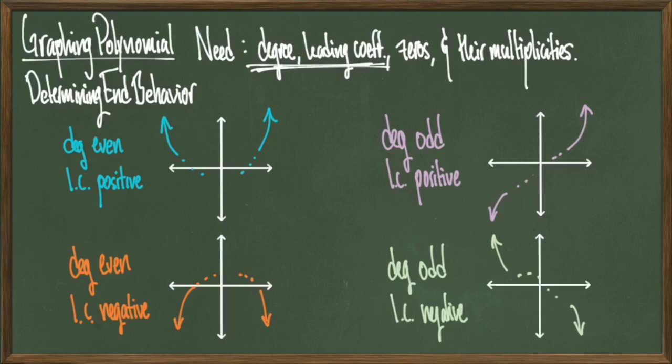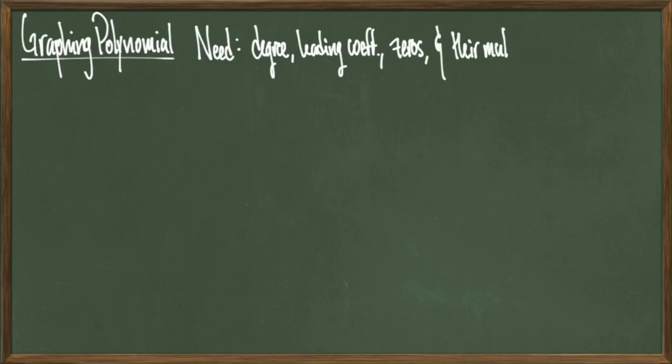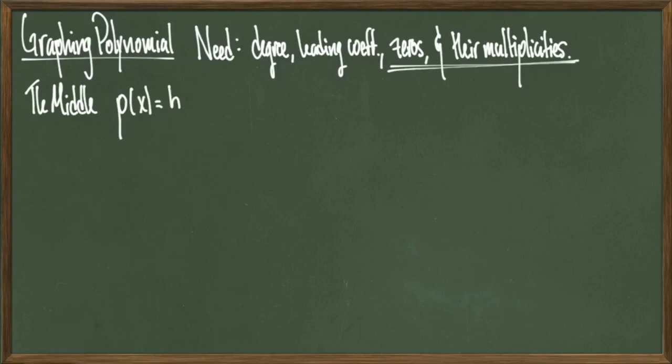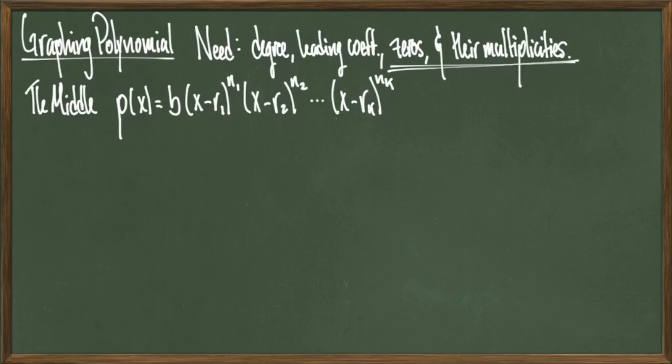So like the name suggests, this is end behavior. We don't yet know what's happening in the middle of those arrows, but the next part will address how to draw correctly what's happening between the arrows. To determine what's going on in the middle, this is where we're going to use our zeros and the multiplicities. Suppose that our polynomial is factored with a number on the outside and all of these linear terms with our roots and their respective multiplicities written next to them.